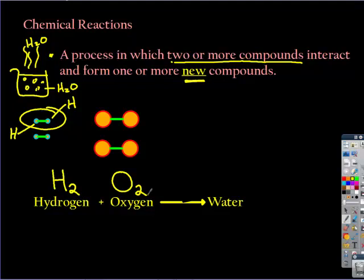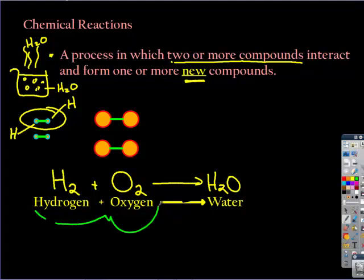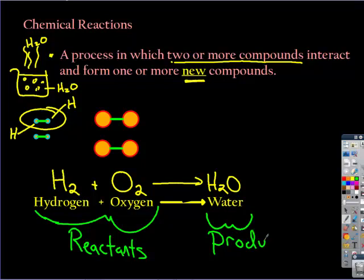When I say oxygen doesn't like to be alone, you can reflect back on basic chemistry — it has to do with stability and that outer energy level of electrons. So we're going to get water here, and this is a chemical reaction. The basic setup is: on one side you list what is going in — your ingredients, what you're starting with. The technical name for that is reactants. The reactants combine and rearrange to form products. You have reactants, and the reactants go through the chemical reaction to form products.